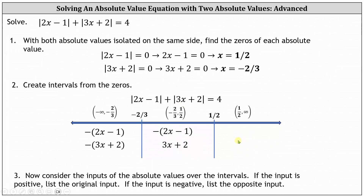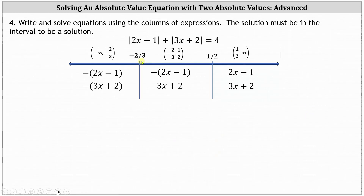Finally, for the interval on the right — the open interval from 1½ to infinity — both inputs are positive, so we list the original inputs of 2x minus 1 and 3x plus 2. For step four, we write and solve equations using the columns of expressions. However, the solution must be in the corresponding interval to be a solution to the original absolute value equation. Using the first column, we sum the two expressions and set the sum equal to positive 4, simply replacing the absolute values with the appropriate expressions over the given interval.